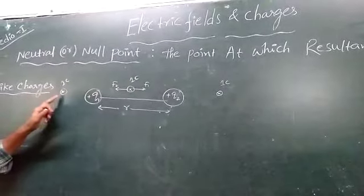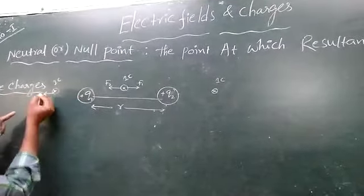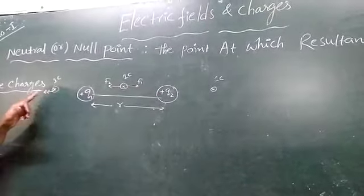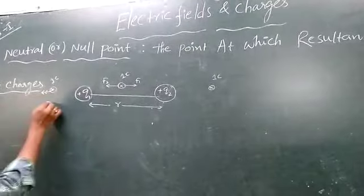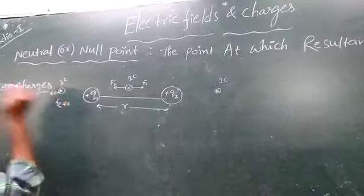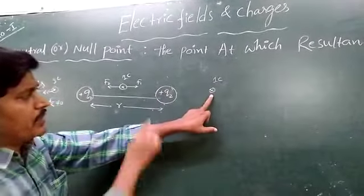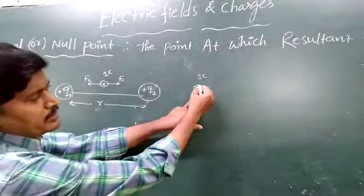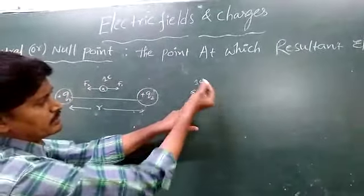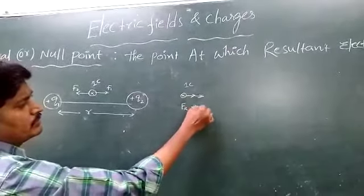When we consider the outside points, this charge repulses in this direction. The resultant force is not equal to zero at those outer positions. Similarly, at the other outside point, this charge repulses in this direction and this charge also repulses in the same direction, so the resultant force is not equal to zero.